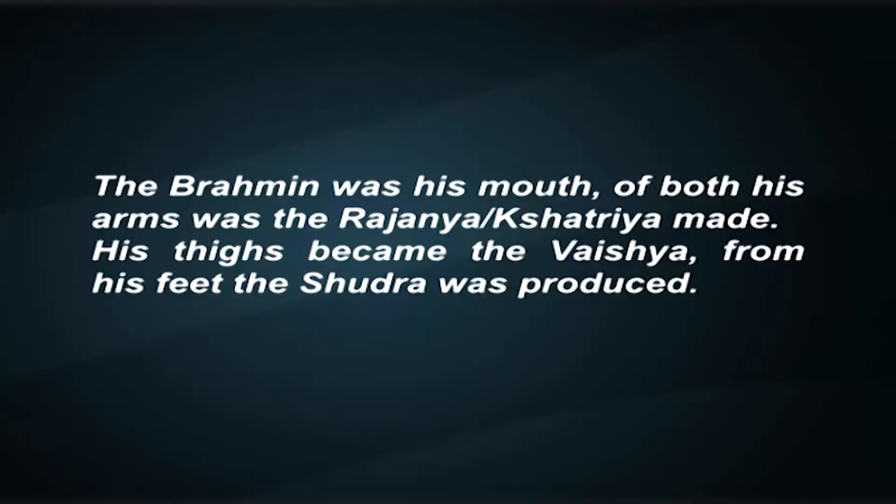From the primeval being, the Purusha, the four Varnas originated. The Brahmin was his mouth, of both his arms was the Rajanya or the Kshatriya made. His thighs became the Vaishya, from his feet the Shudra was produced.